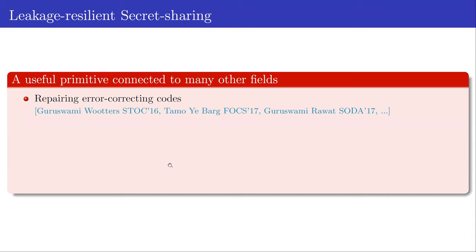It has connections to many other fields. For example, it is related to the fascinating problem of repairing erasure coding codes. In this problem, the main objective is to learn minimum information from each share so that the secret can be fully reconstructed. In principle, if you are able to fully reconstruct the secret, then the secret sharing scheme is not leakage resilient. On the other hand, it might be the case that you can't fully reconstruct the secret, but the secret sharing scheme is still not leakage resilient, if the leakages reveal some information about the secret S.